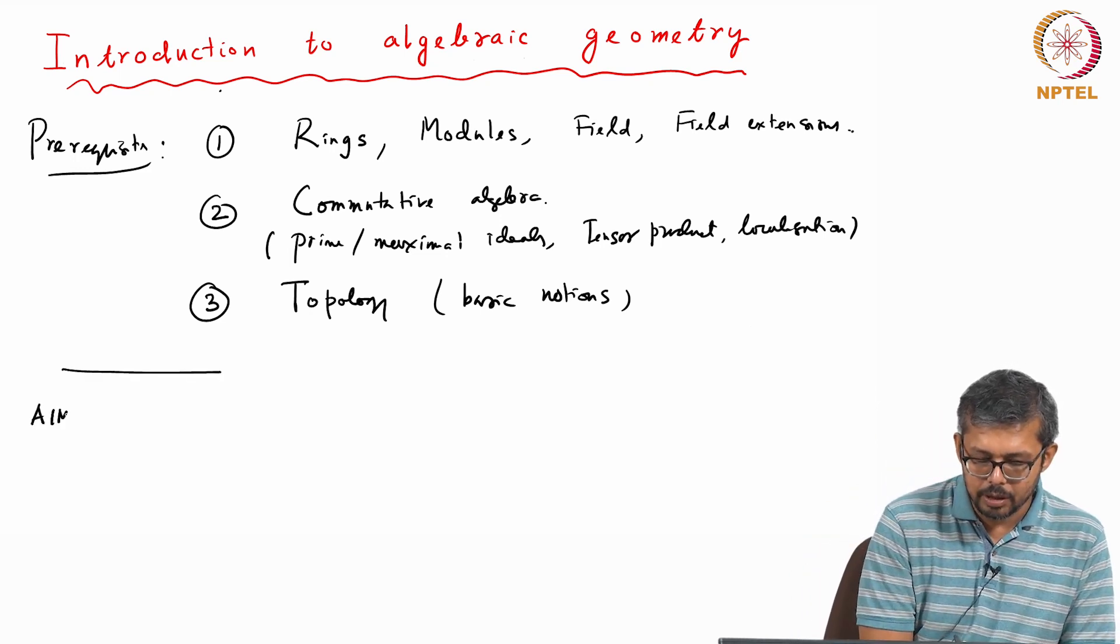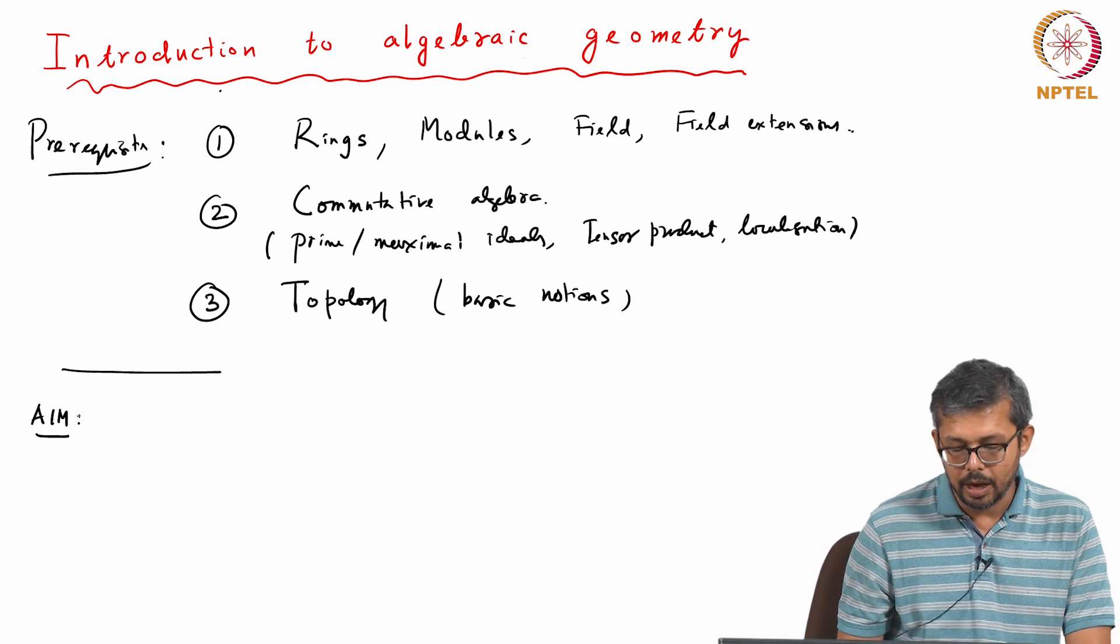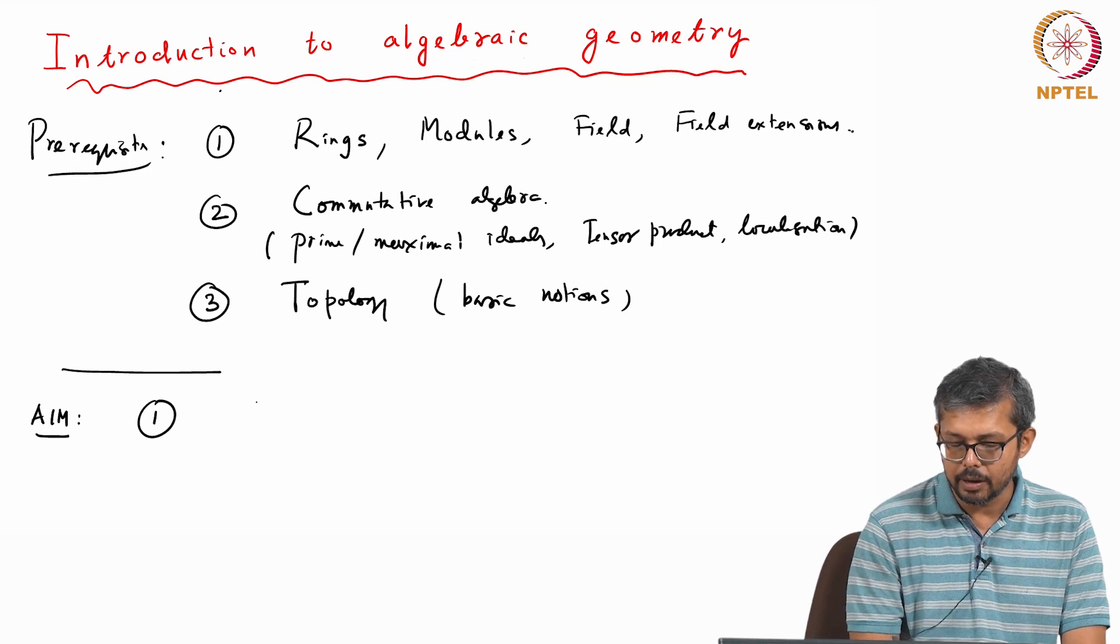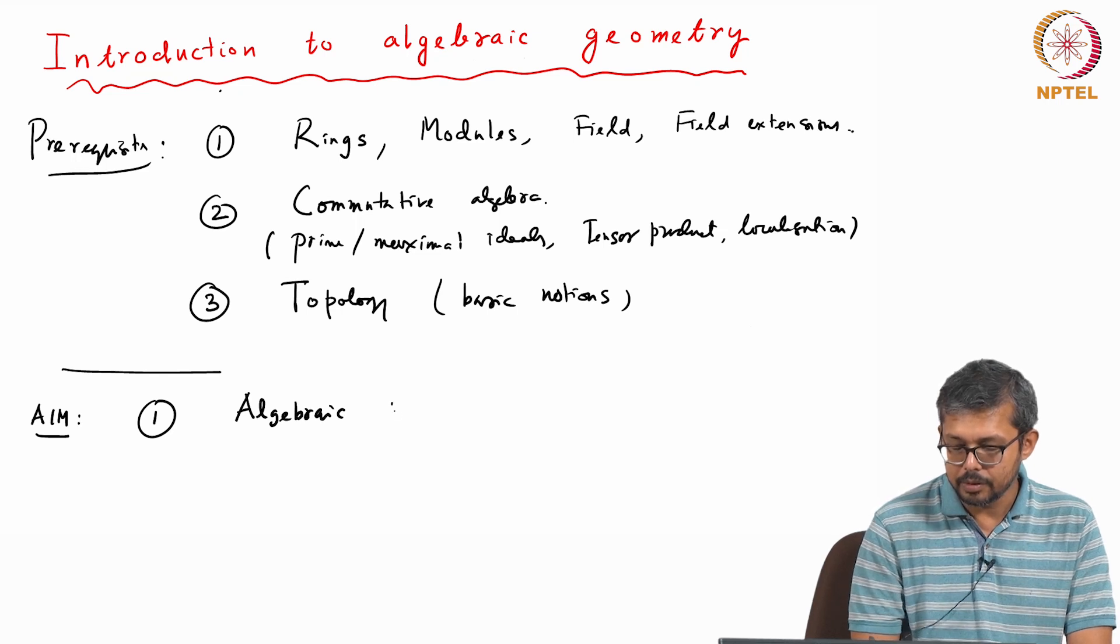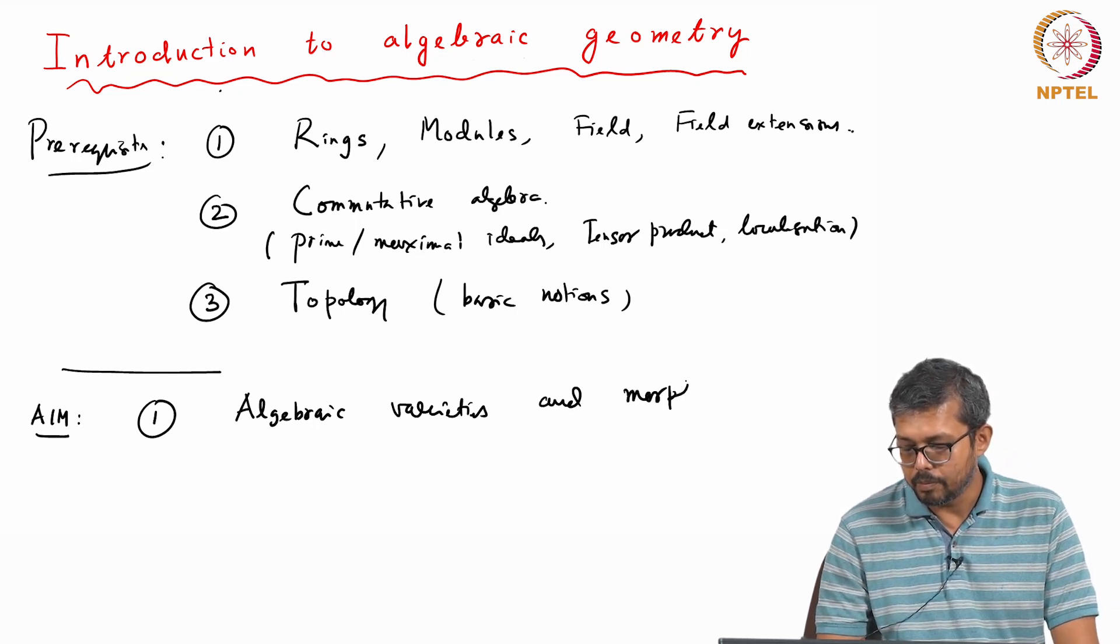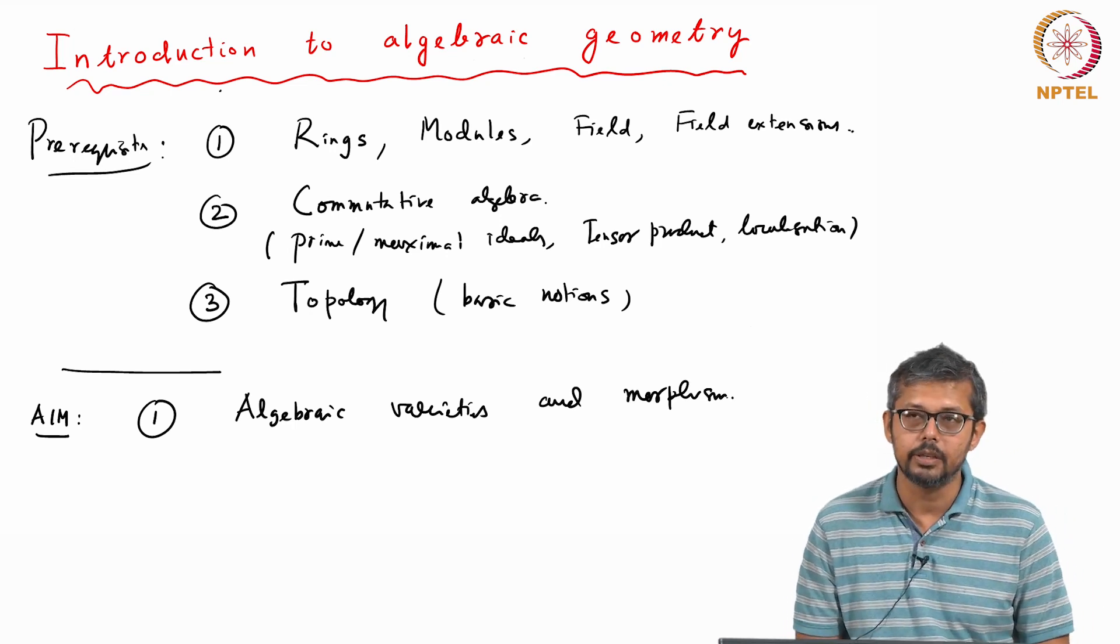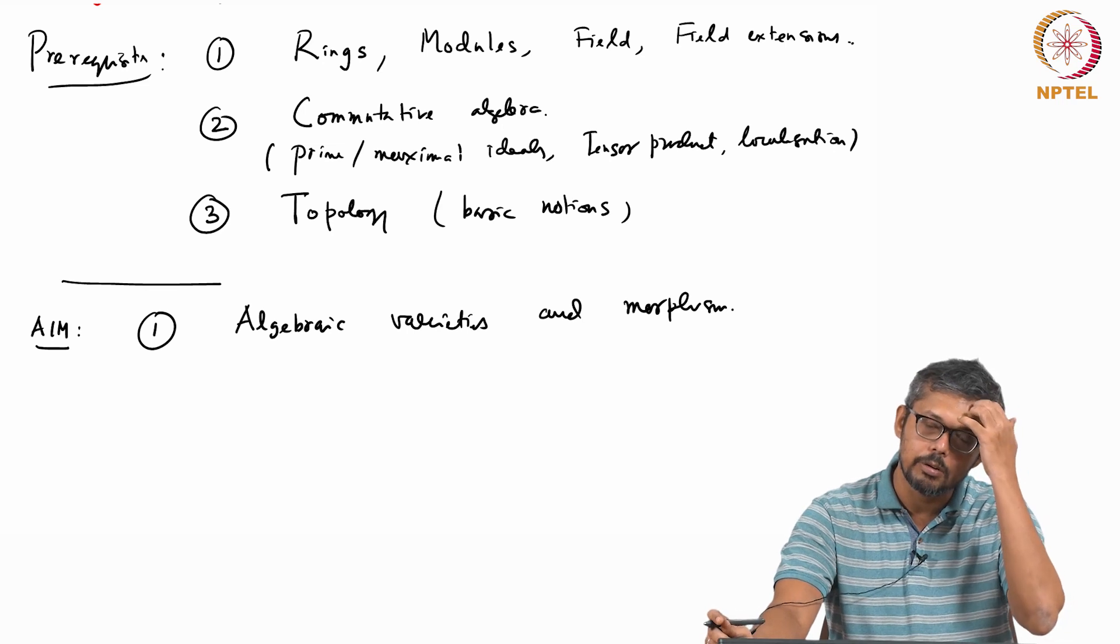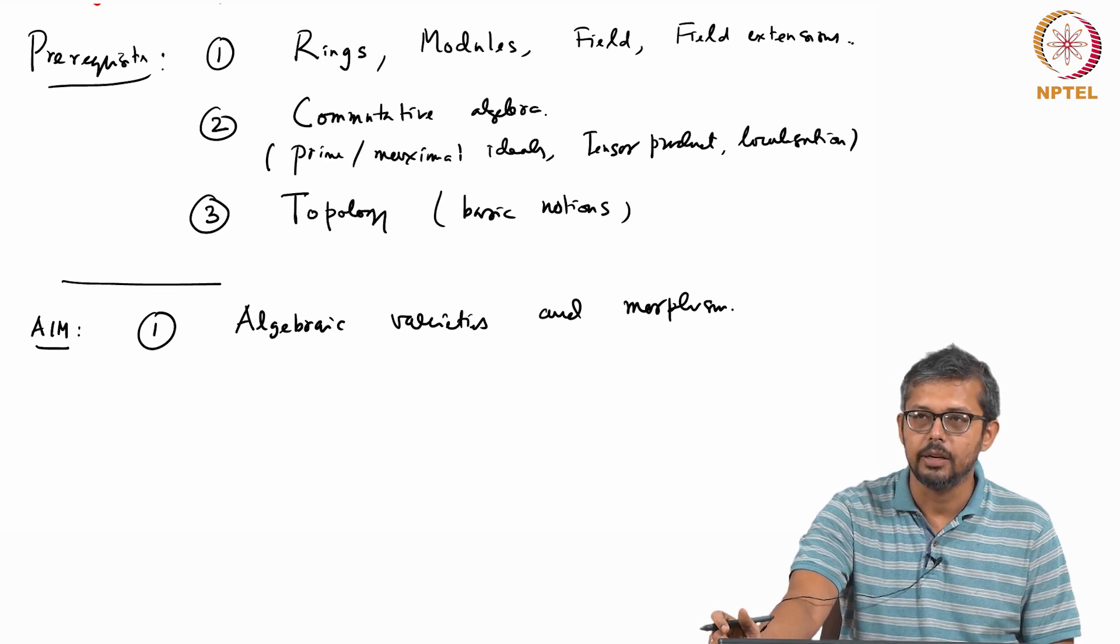As I said, the aim is mostly for this introductory course to master students. We aim to cover following topics. First we would like to cover topics like what are called algebraic varieties and morphisms among them. This can be defined in a very general way. But first we will start with what are called affine algebraic varieties and then we will slowly build to the theory of pre-varieties and varieties.